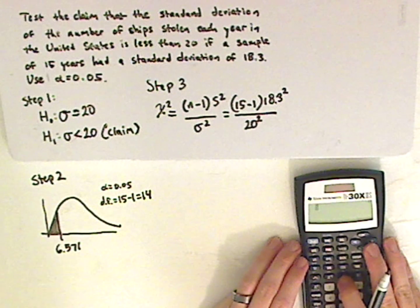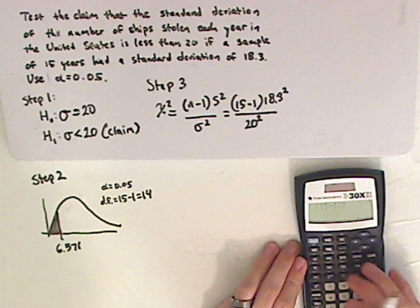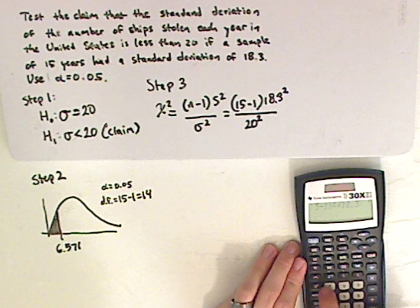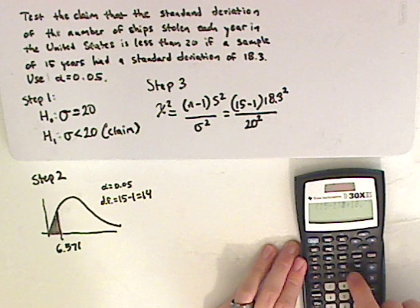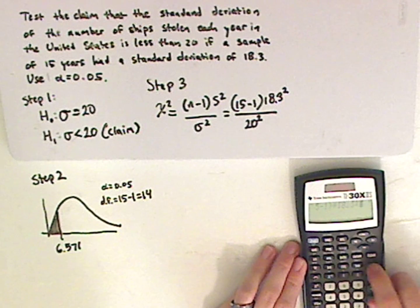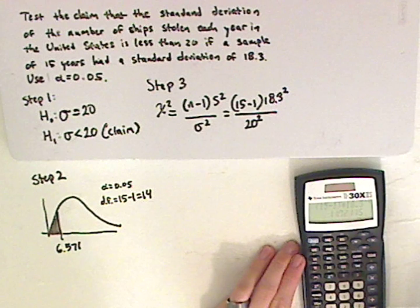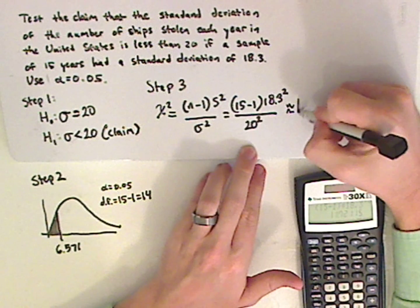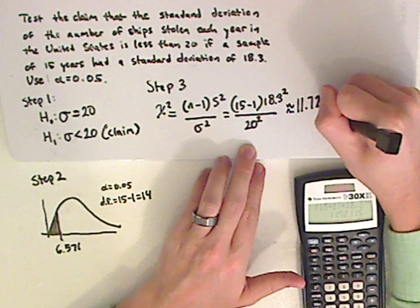So on your calculator, just plug all those in. So parentheses, 15 minus 1, close parentheses, times 18.3 squared. I mean, error. The 15 minus 1 is not supposed to be squared. So 18.3 squared divided by 20 squared. And I get approximately, since this is three digits, I'm going to round this to three decimal places. 11.721.